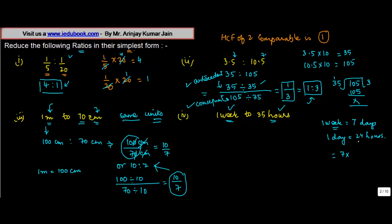So therefore, one week can also be written as 7 times 24 hours, or you can write this as, 7 times 4 is 28, 8 to carry, 7 times 2 is 14 plus 2, 16, so 168 hours is to 35 hours. Now both the quantities are in the same units, so we can do the comparison. So we write this as 168 upon 35.